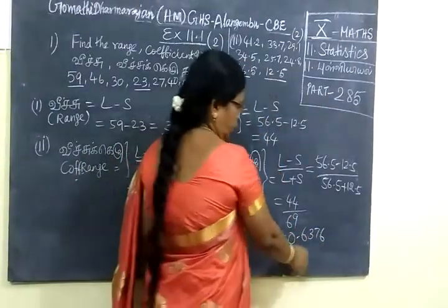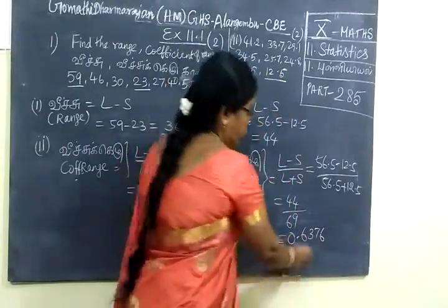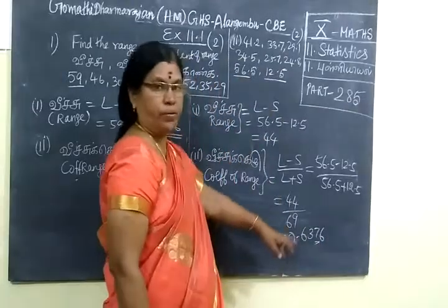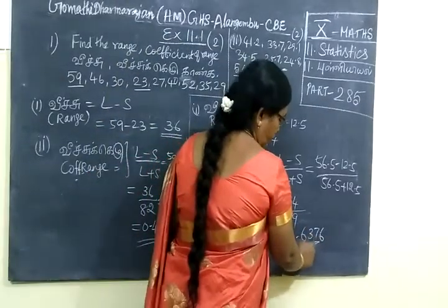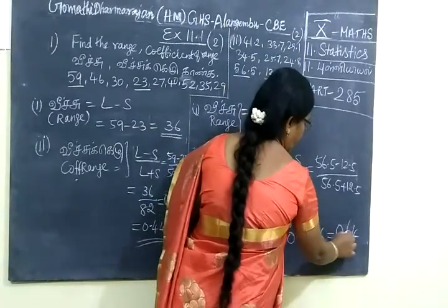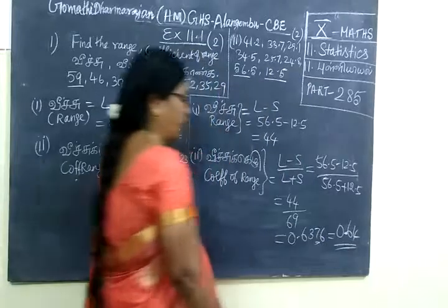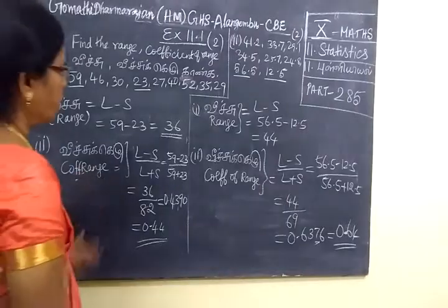Looking at the decimal point, we have 7, which is more than 5. More than 5 means we round up. So we get 0.64. The coefficient is 0.64. This is a 2-mark question.